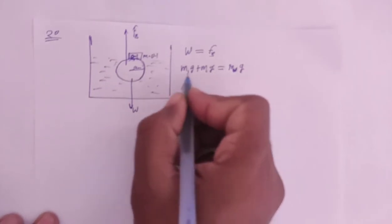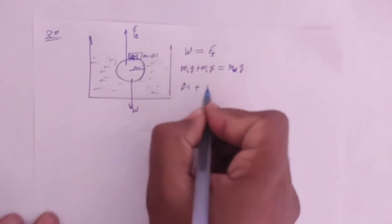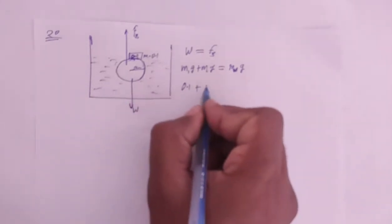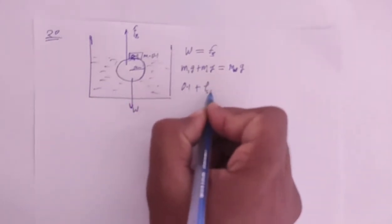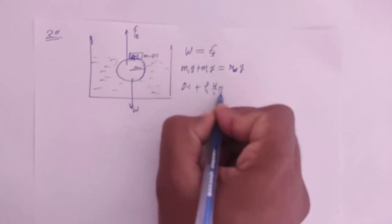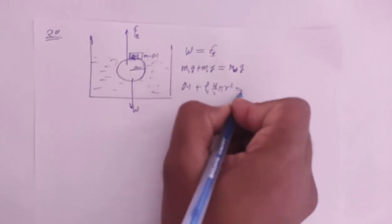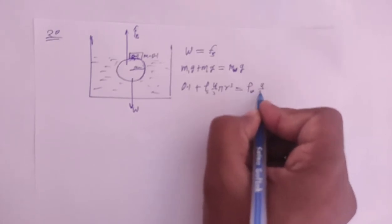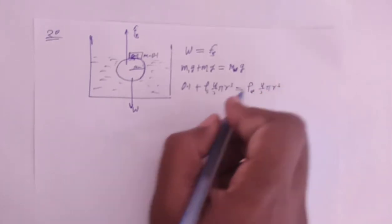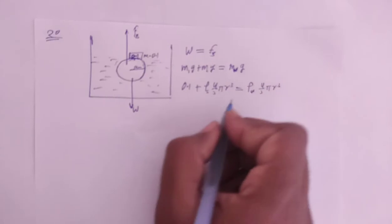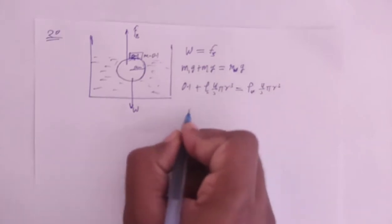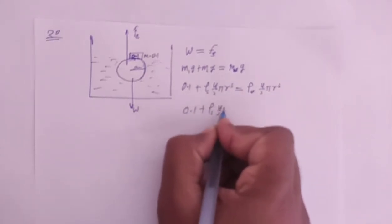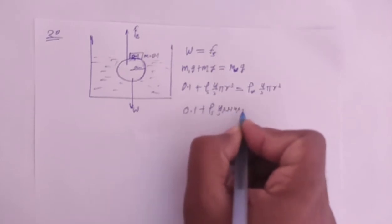So M1·g and 0.1·g cancel out. We get 0.1 plus M2, where M2 equals density of sphere times volume, which is (4/3)·π·r³, and this equals density of water times (4/3)·π·r³.